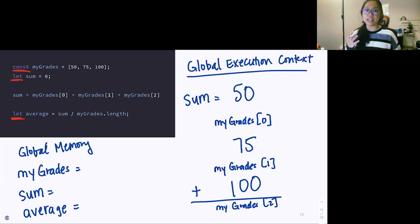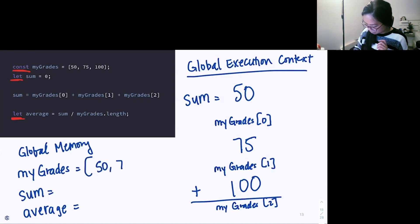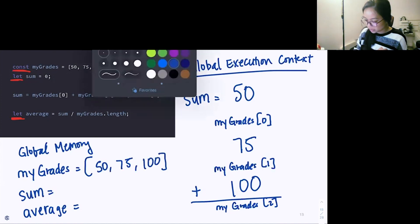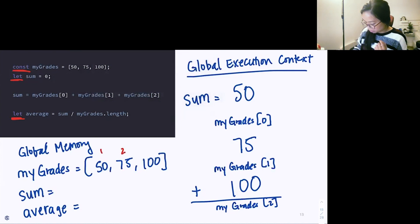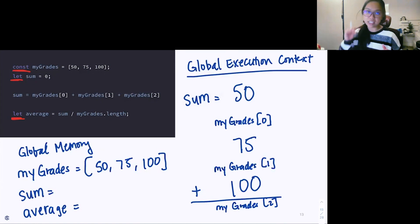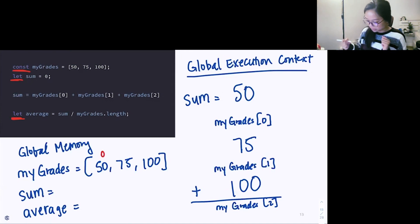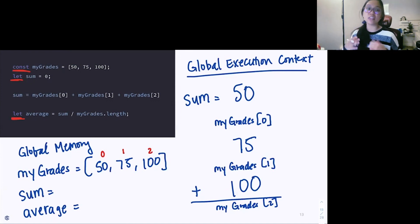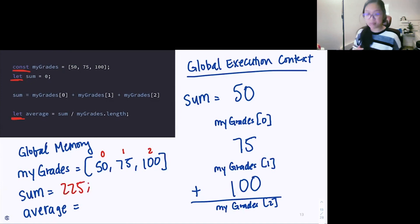We have sum set to zero and we are changing its value — reassigning sum to be now myGrades at the zeroth index. In an array, the index always starts at zero. So 50 is the zeroth index, 75 is the first, and 100 is the second. When we're reassigning sum, we're adding 50 plus 75 plus 100, which is 225. So sum is now set to 225 because we used the let keyword and could reassign it.